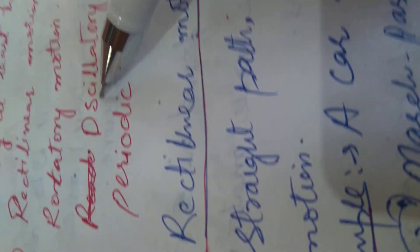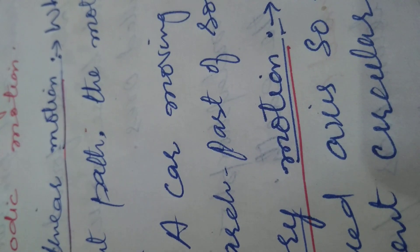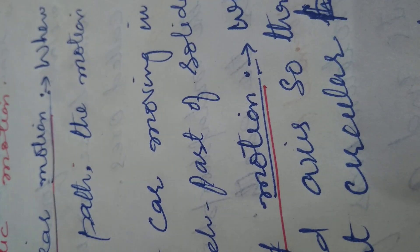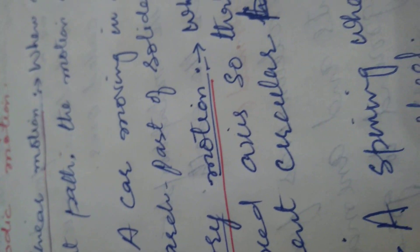Rectilinear motion: when an object moves along a straight path, the motion is said to be rectilinear motion. For example, a car moving on a straight road, or soldiers marching in a straight line during a parade. Rotatory motion: when an object moves about a fixed axis so that its particles move in circular paths, the motion is said to be rotatory. For example, a spinning wheel.